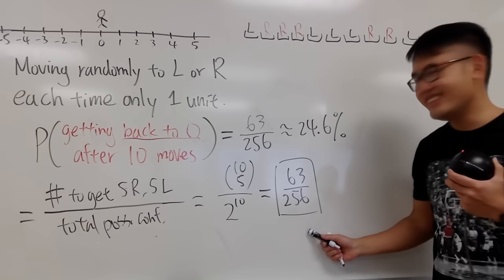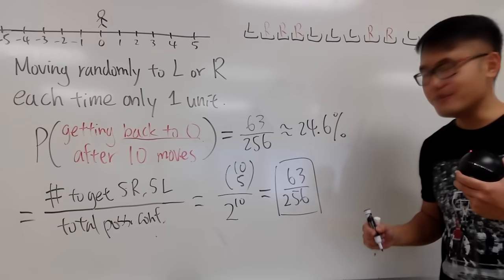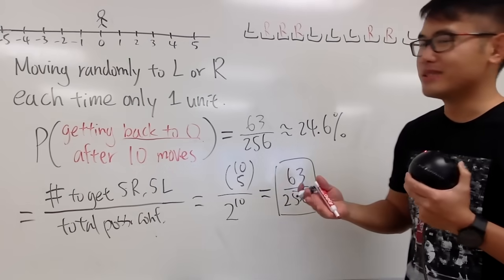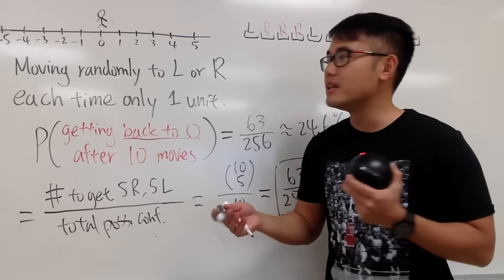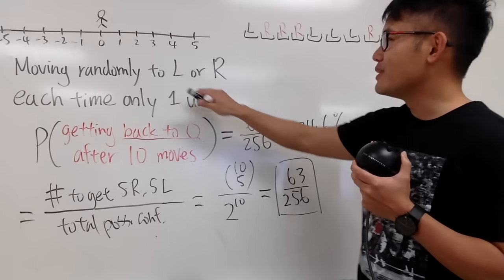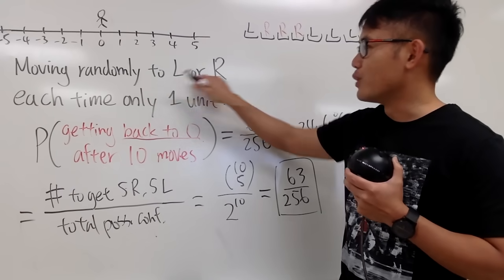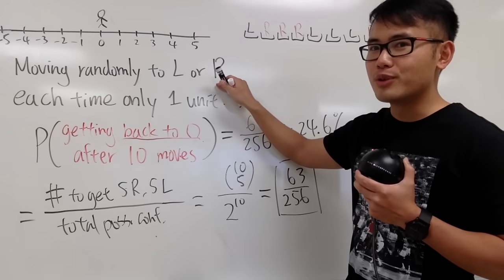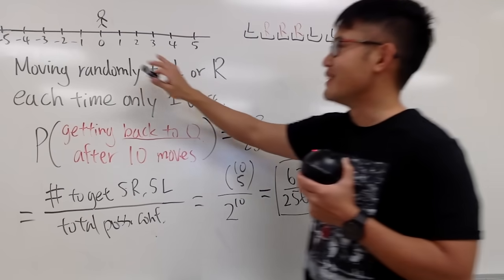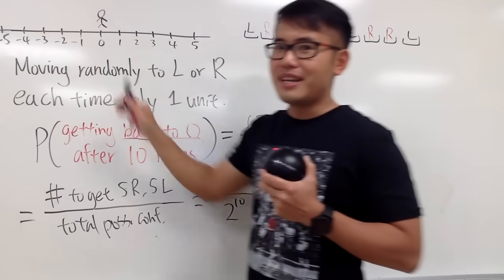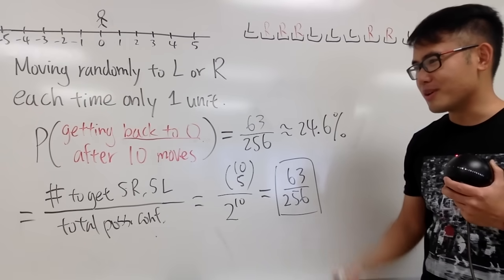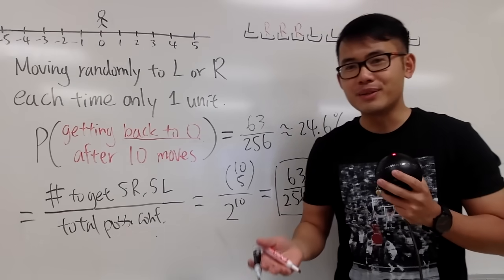And that's the answer. I'll leave a slightly more challenging question for you: what happens if we have a 2D version? Not only can you move left or right, but also up and down. That's the 2D situation. And if you want, you can also think about the 3D version — I'll leave that to you guys.